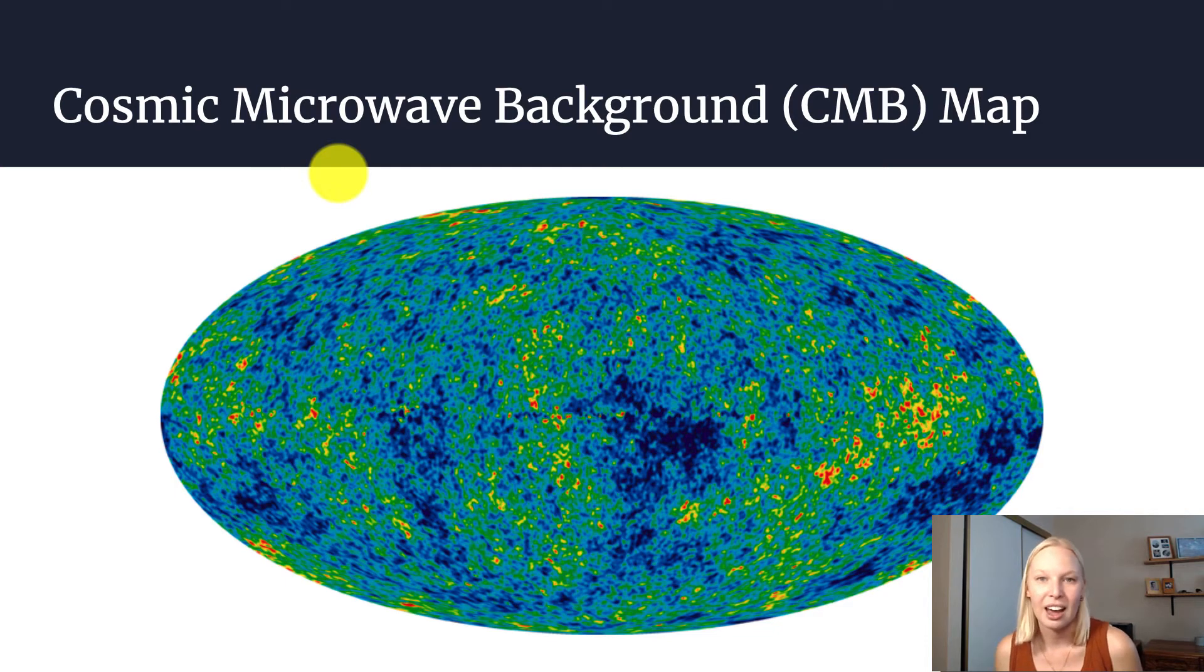And what they are is they look like maps of the sky in its infant form, in its early form. And so what these actually are showing is that these red or warmer colors illustrate more density, so more matter packed into that space there.